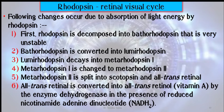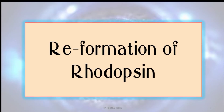At a glance, the following changes occur: first, rhodopsin is decomposed into bathorhodopsin, which is very unstable. Bathorhodopsin is converted into lumirhodopsin, then lumirhodopsin decays into metarhodopsin I. Metarhodopsin I changes into metarhodopsin II. Metarhodopsin II splits into scotopsin and all-trans retinol. Then all-trans retinol is converted into all-trans retinol by the enzyme dehydrogenase in the presence of reduced nicotinamide adenine dinucleotide.